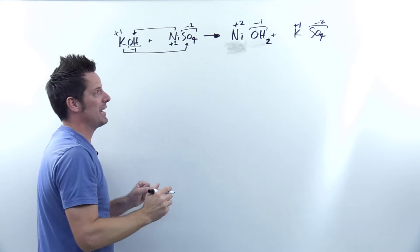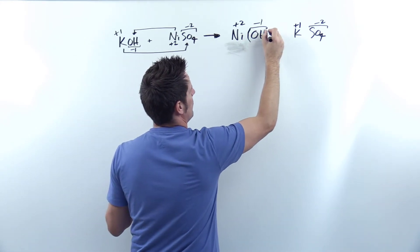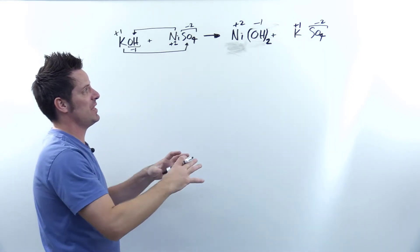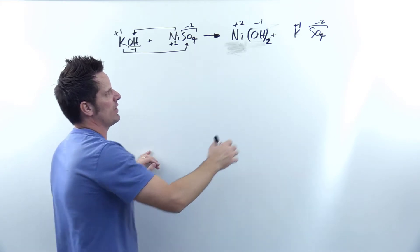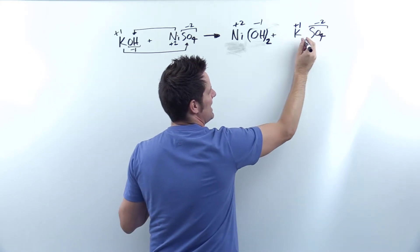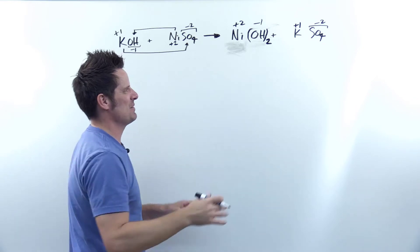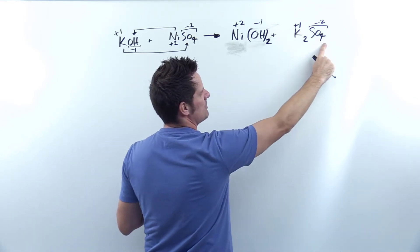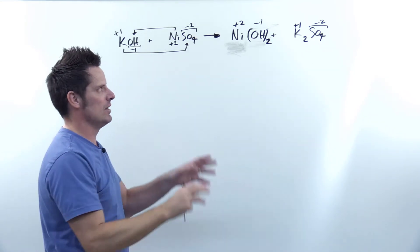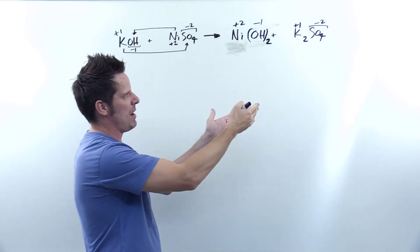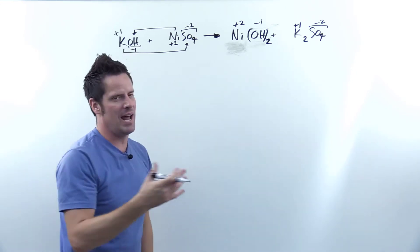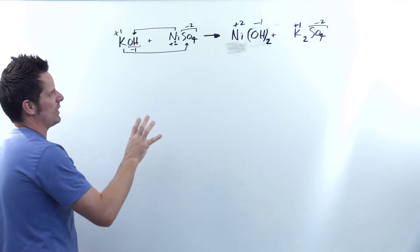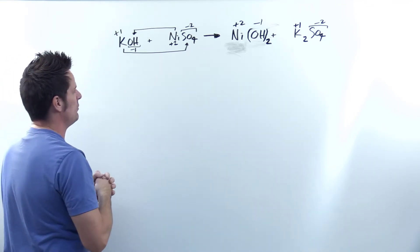Now because OH is a polyatomic, I have to write a set of parentheses around it, so that I'm indicating there are two of the entire OH collectively — not just of the H. Similarly over here, I bring the two down in front of the potassium and write down a two. Then this one comes down as a subscript next to the SO4. I don't have to add it since ones are implied. Now in order to keep things a little more organized, I'm going to erase all the charges because we now have a beautiful equation.